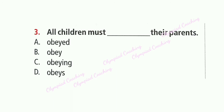Question 3: All children must dash their parents. Option B is correct: Obey their parents. 'Must' is a modal verb, and the root verb comes after a modal. 'Obey' is the root verb. So option B is correct.